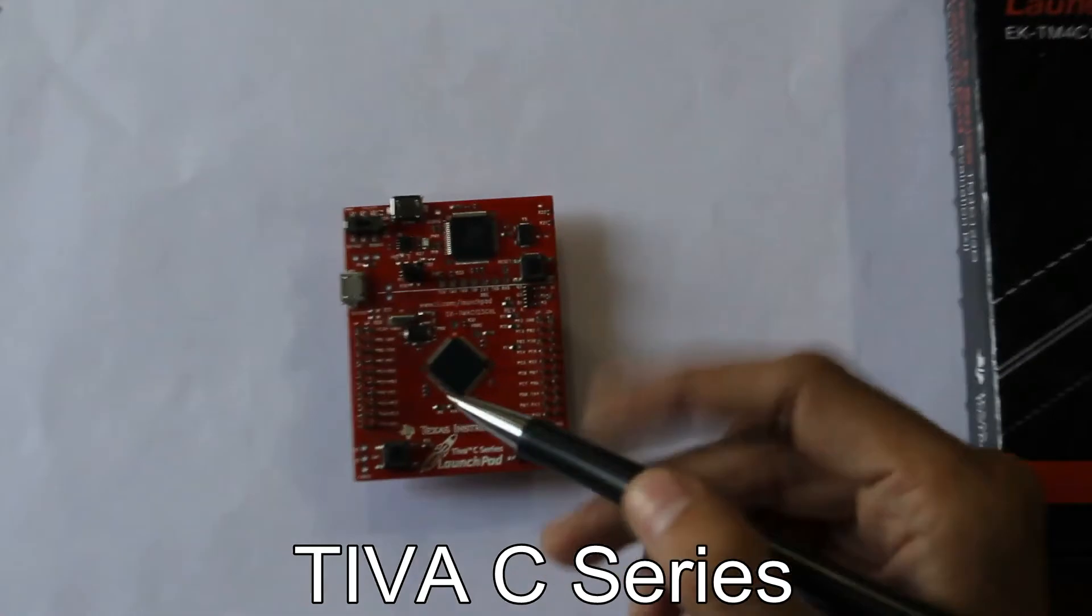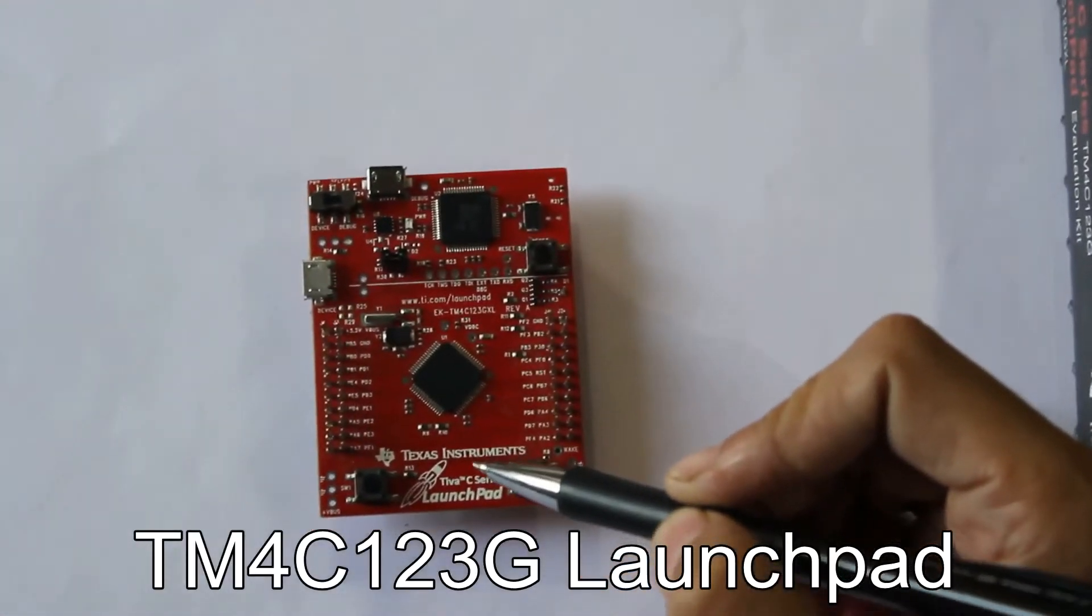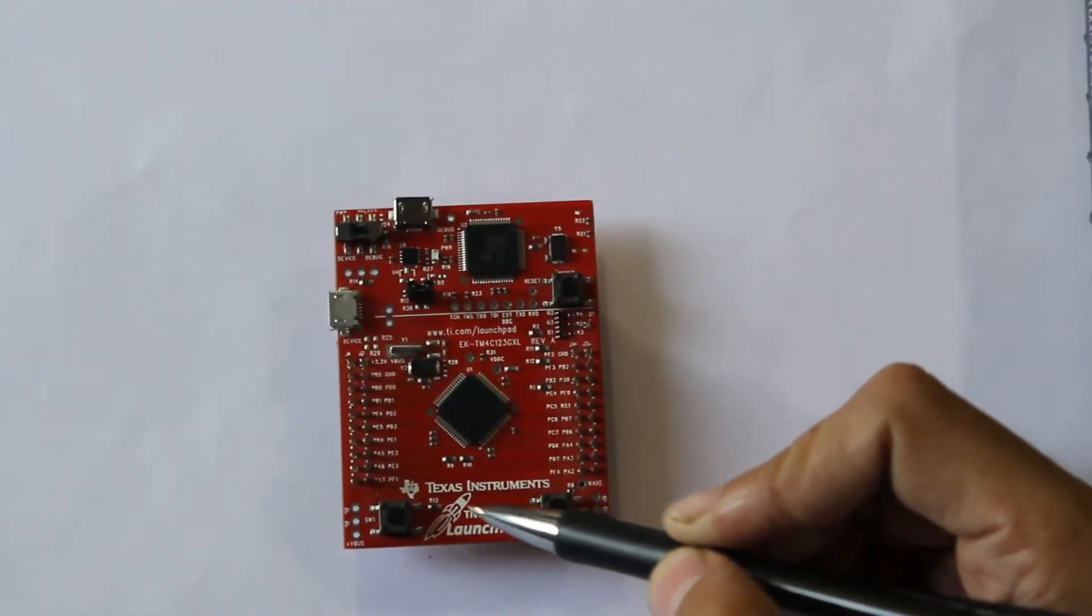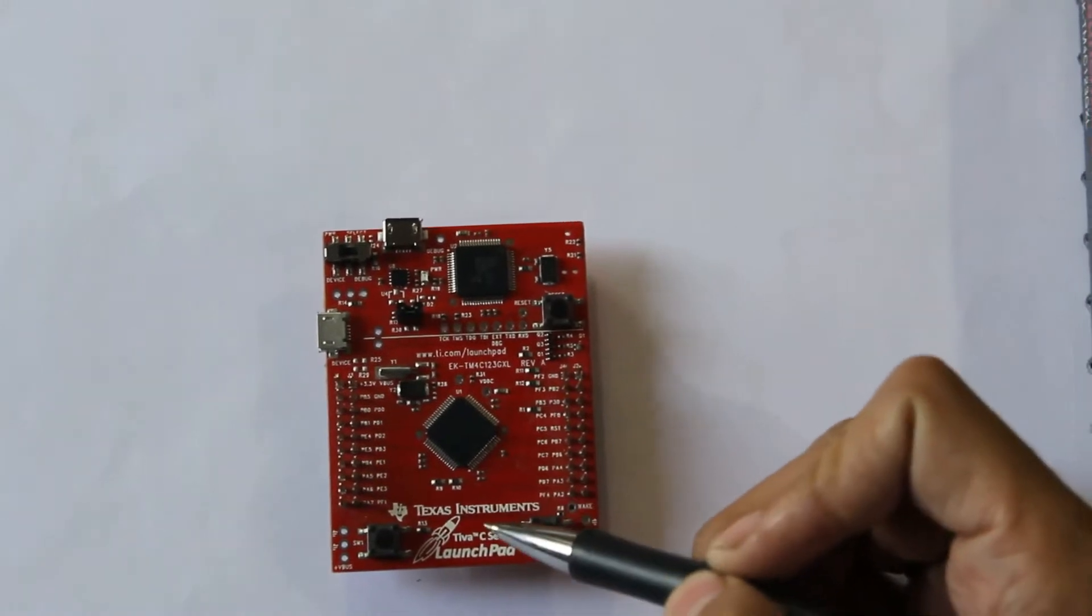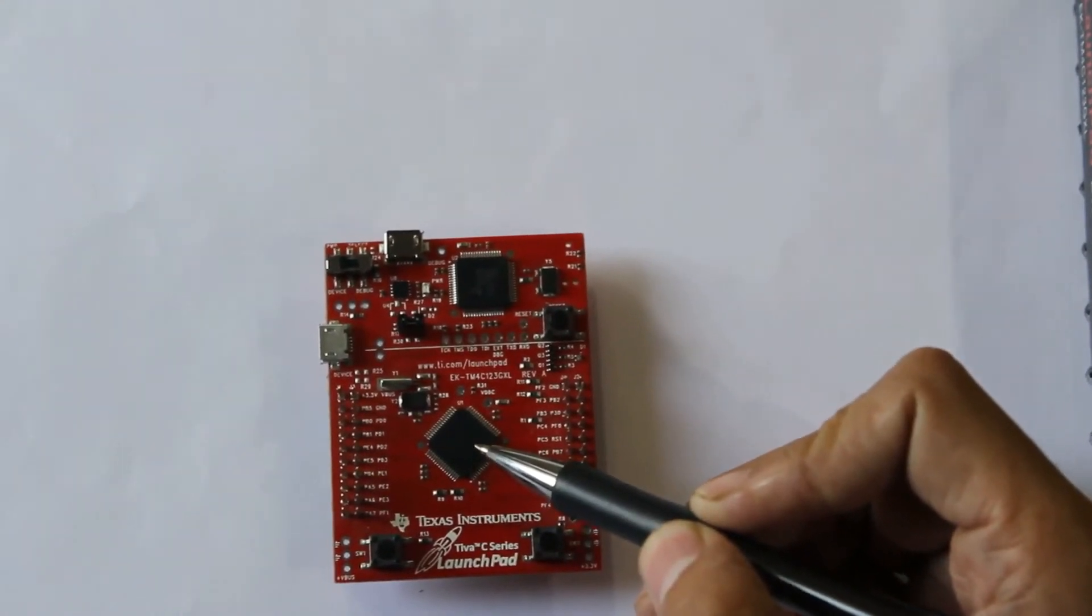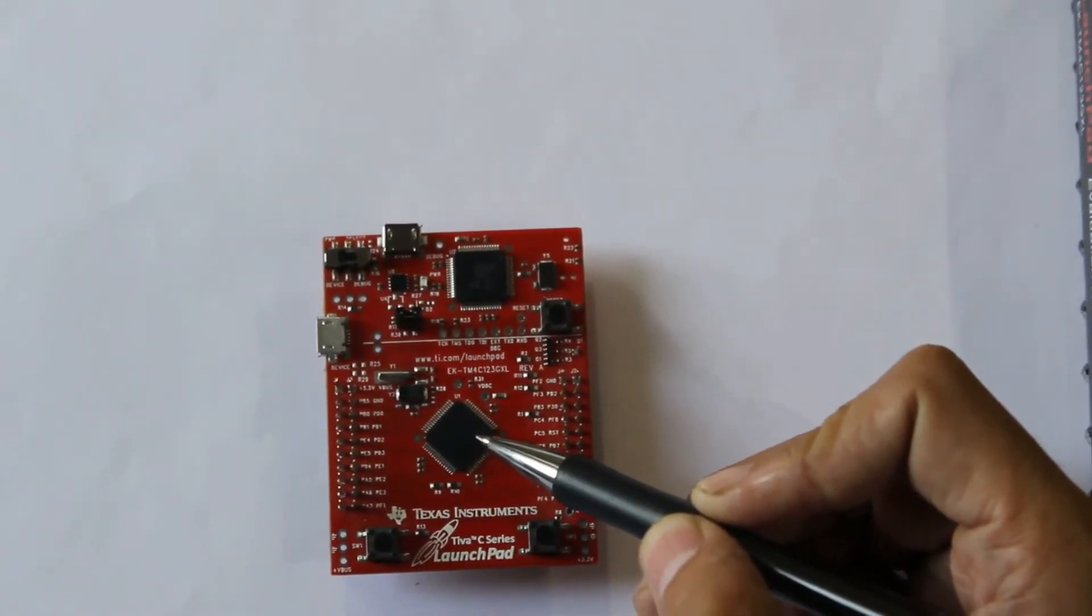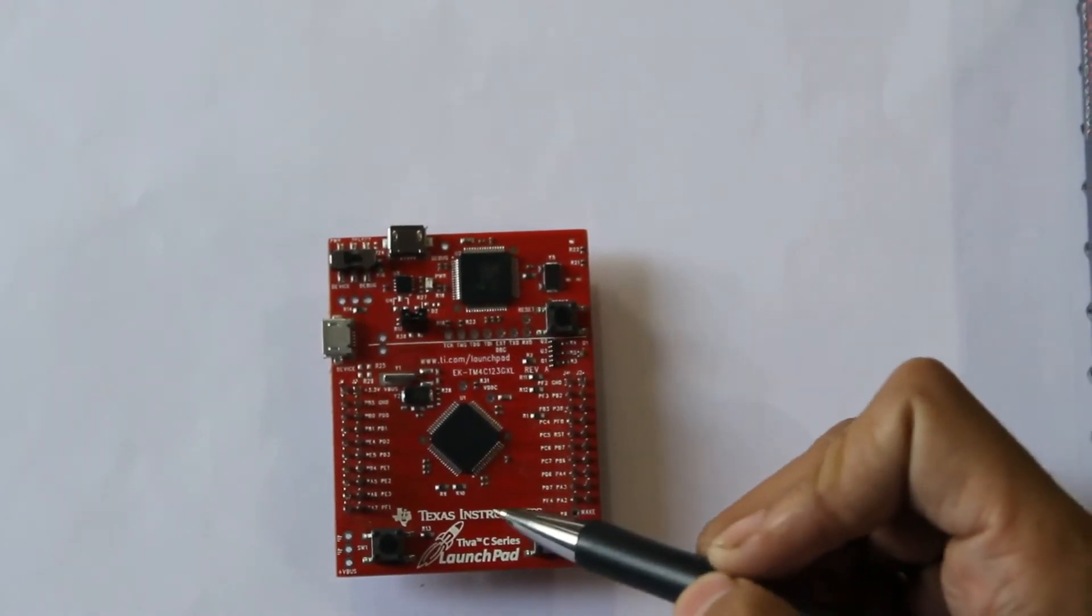This is Tiva C Series TM4C123G Launchpad Development Board which is a 32-bit ARM Microcontroller Board. This is TM4C123GH6PM Microcontroller and it is the heart of the system.